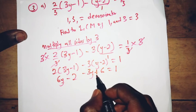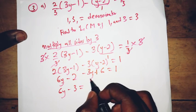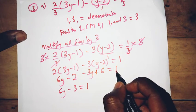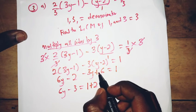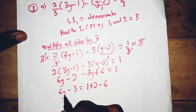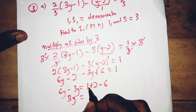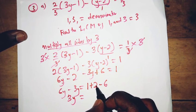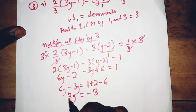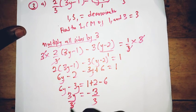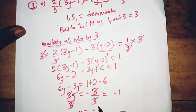Now grouping like terms: 6y minus 3y gives 3y, and constants: negative 2 plus 6 gives positive 4, equals 1. Moving constants to the right: 3y equals 1 minus 6, which is negative 3. Dividing both sides by 3: y equals negative 1.